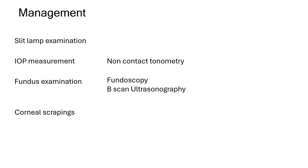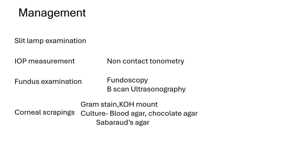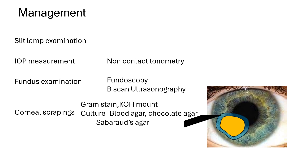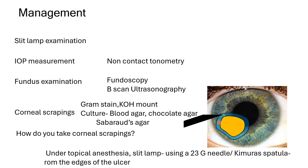The most important investigation is corneal scrapings. Send for Gram stain for bacterial keratitis and KOH mount for fungal keratitis. Culture media: blood agar and chocolate agar for bacteria, Sabouraud's agar for fungi. Scrapings are taken using a 23-gauge needle or Kimura spatula from the edges or base of the ulcer for maximum organism yield.